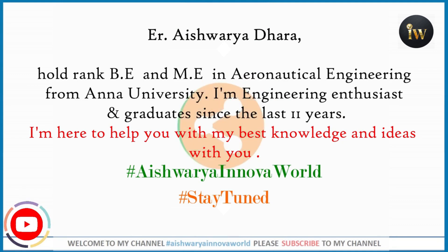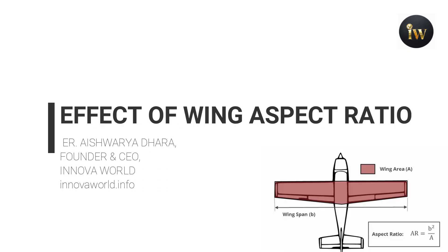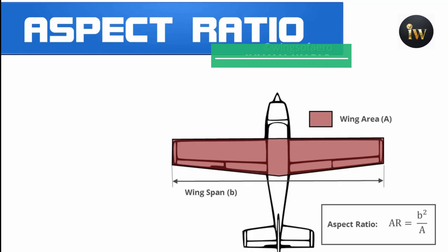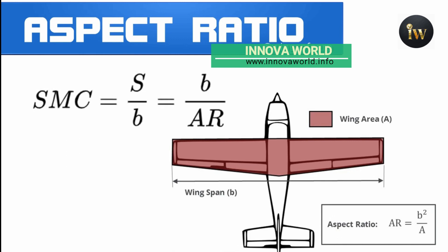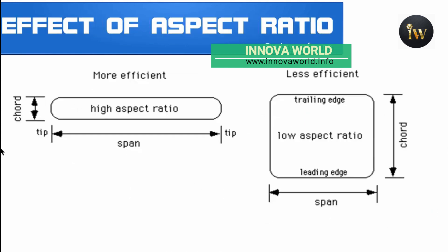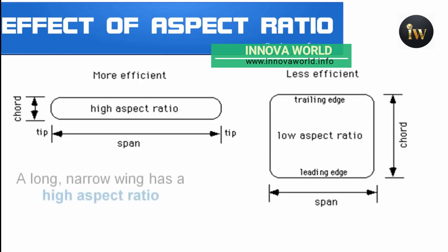Today we are going to discuss the effect of aspect ratio. Aspect ratio of a wing is the ratio of its span to its mean chord. It is also equal to the square of wingspan divided by the wing area.